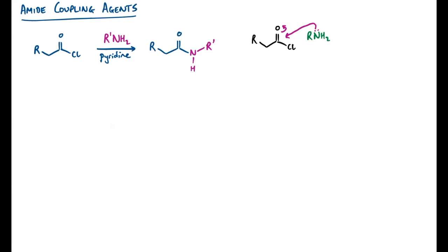We could draw a reasonably traditional mechanism looking something like this, which would give us this intermediate, which then after the loss of a proton allows us to expel the chloride as a leaving group and generate our amide bond. We can just make sure there's a weak base in there to mop up that HCl and push the reaction forwards.